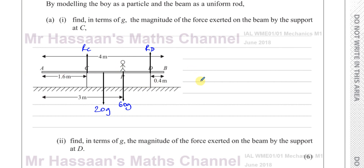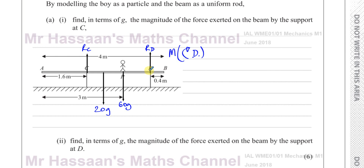To find the reaction force at C, we need to eliminate the reaction force at D, since there are two unknowns. If we take moments about D, the reaction force at D is eliminated because its moment about D is zero — the force acts through D, so the distance is zero.